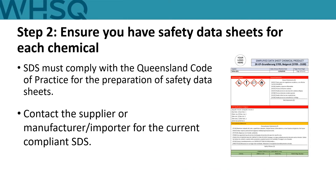Now that you have your list, you will need to make sure you have an SDS for each chemical as step two of the process. Contact the supplier, manufacturer or importer of the hazardous chemical, who should provide you with the current compliant SDS. An overseas version of an SDS without review against work health and safety laws may not be compliant. It must meet the definition according to the WHS laws and be compliant with the SDS code of practice, such as having Australian contact details.